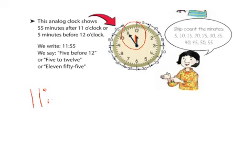And now I have to skip count by fives all the way around. So, 5, 10, 15, 20, 25, 30, 35, 40, 45, 50, 55. So that would make it 11:55.